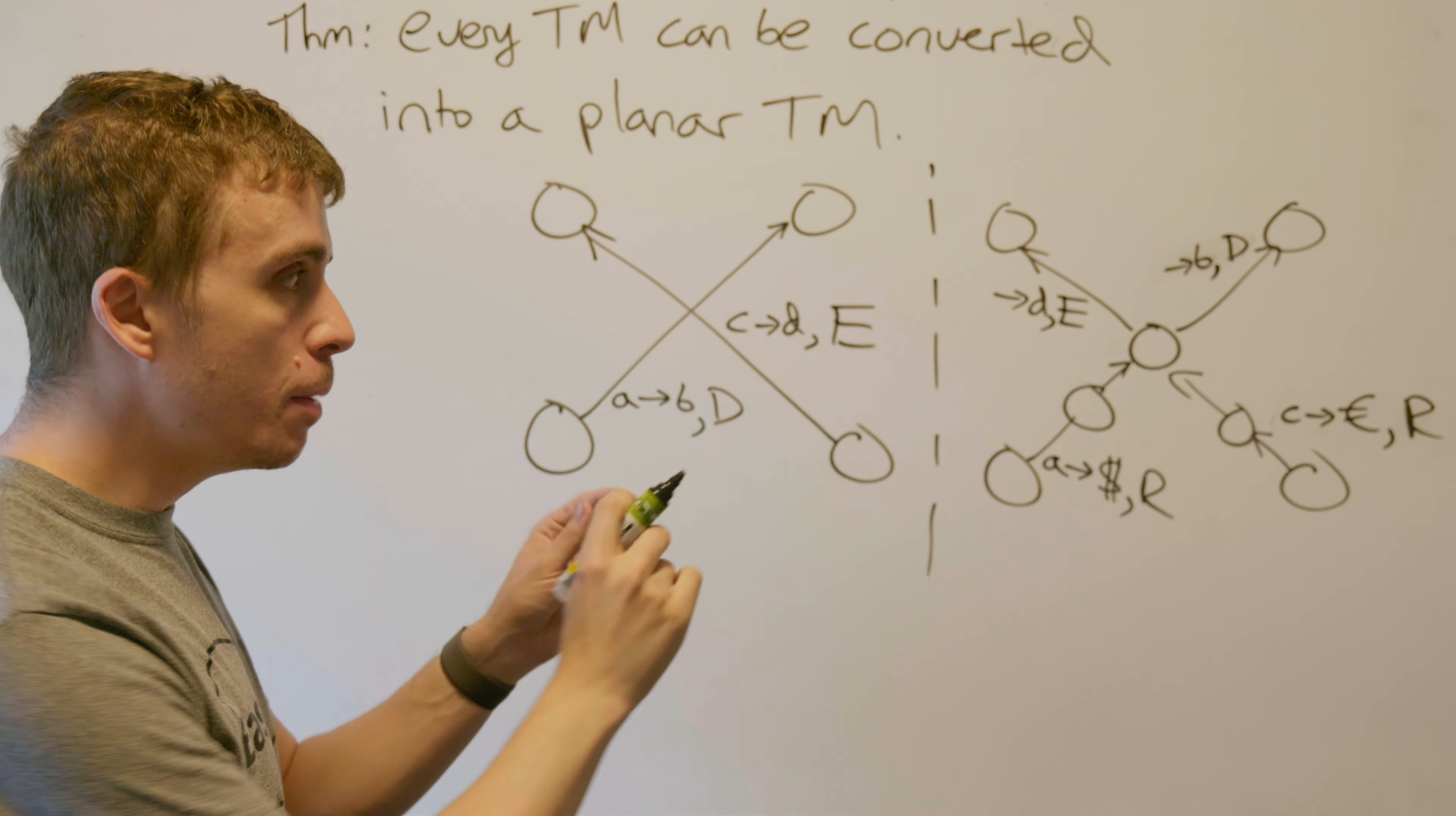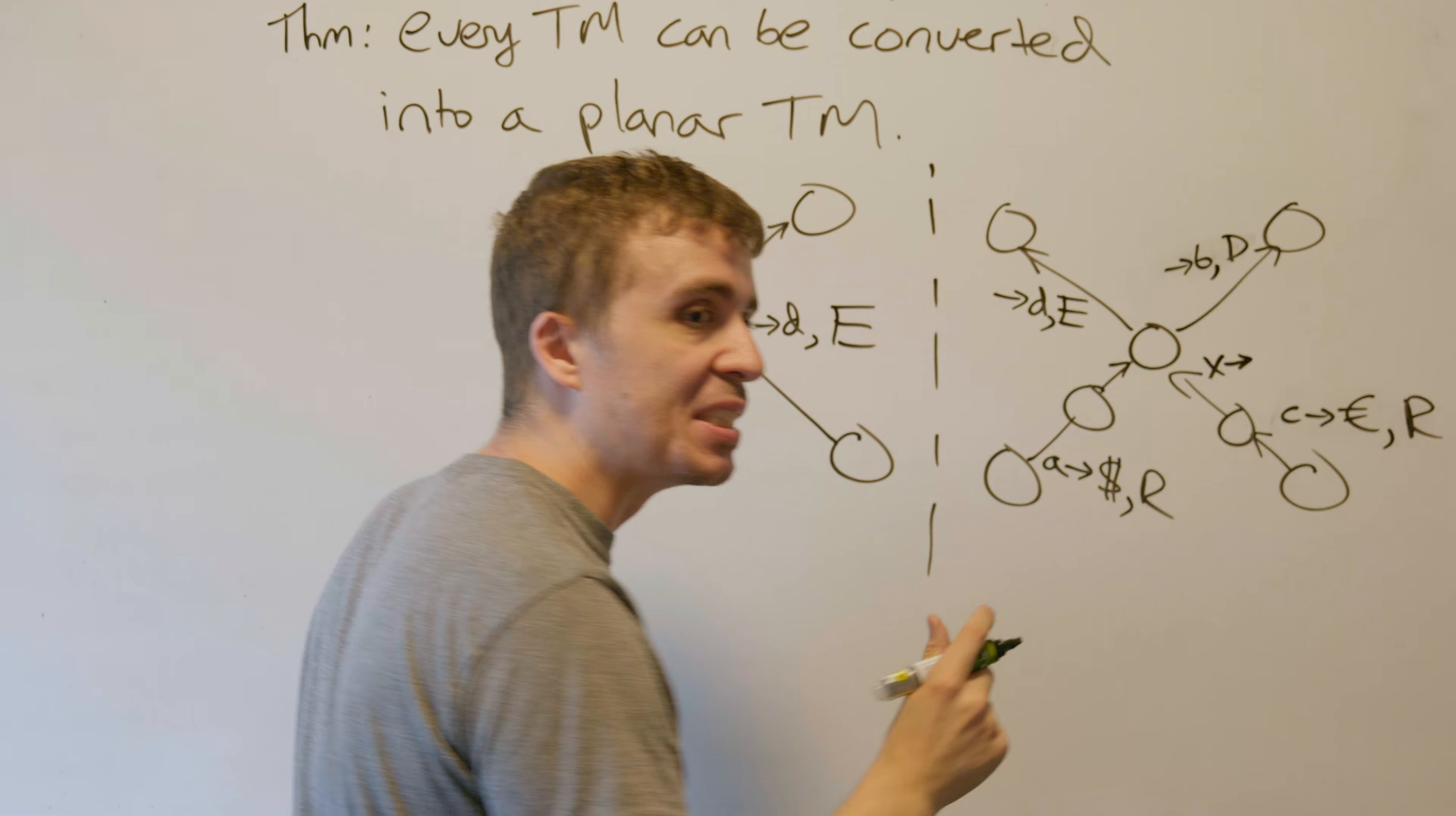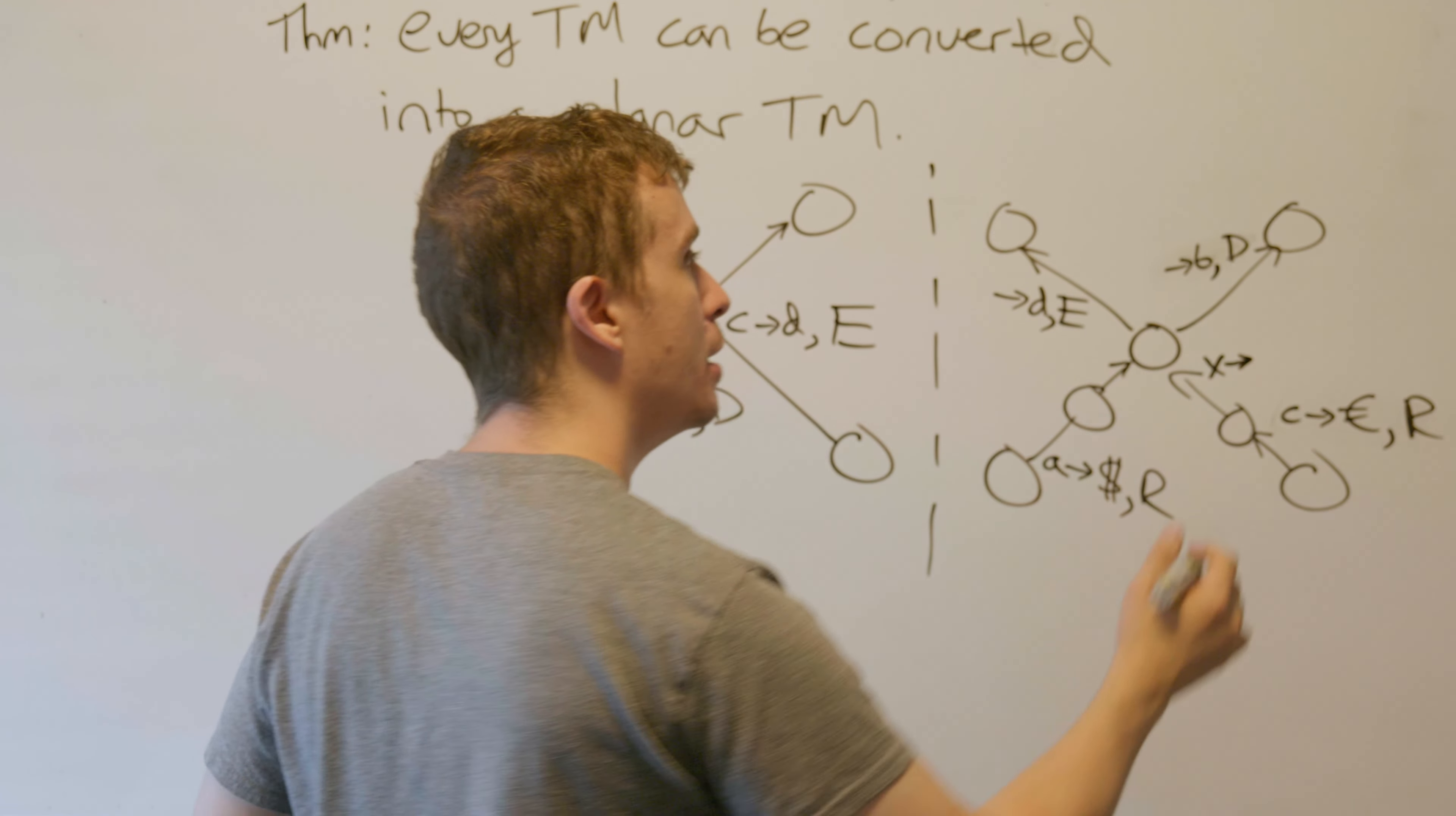What do we put on these transitions right here? We could be reading anything once we move right one cell, because there could in principle be anything there. Whatever X content we see there, whether it's an original tape symbol or whatever, we will always move left and not change it.